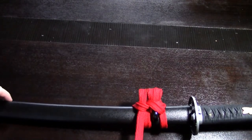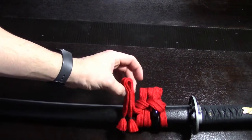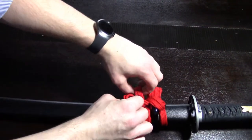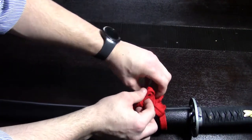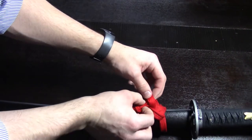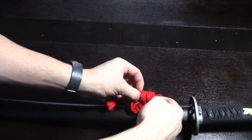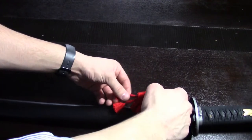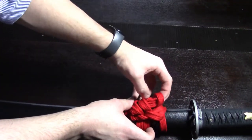Now from here, take the sagyo, fold it, and we go up and through all three of these loops. So one, two, and three.